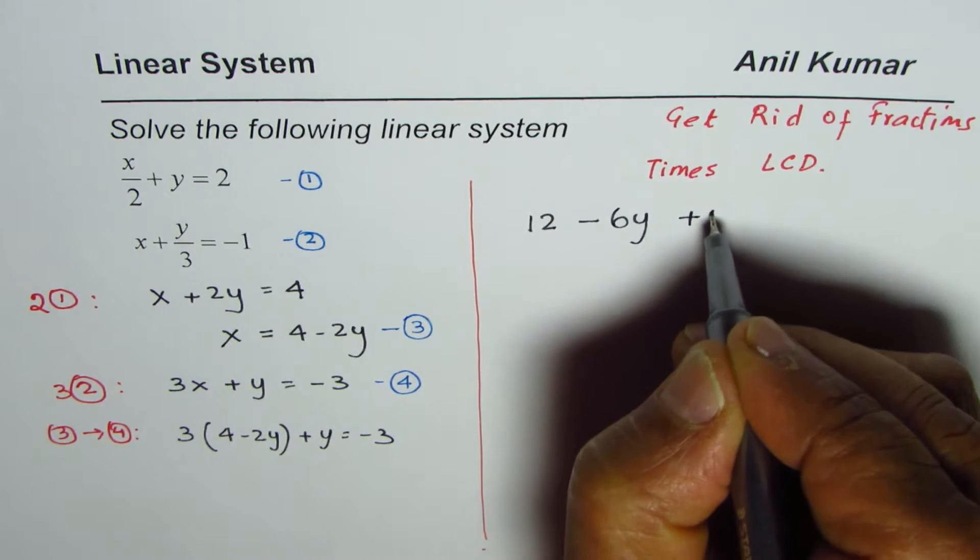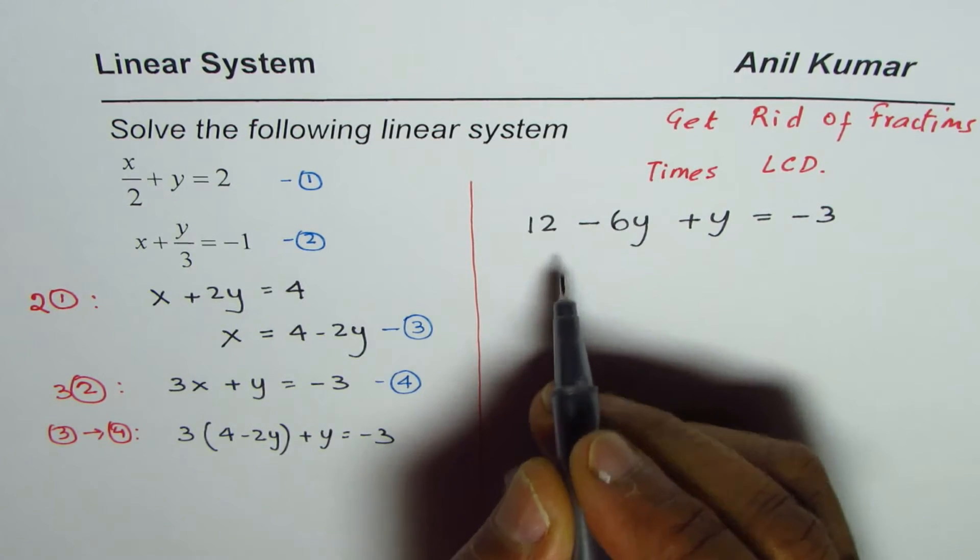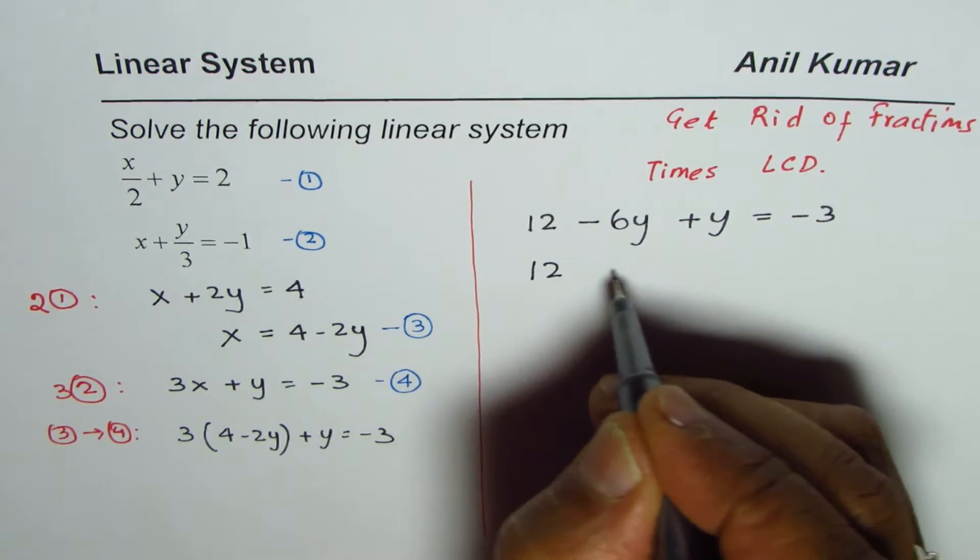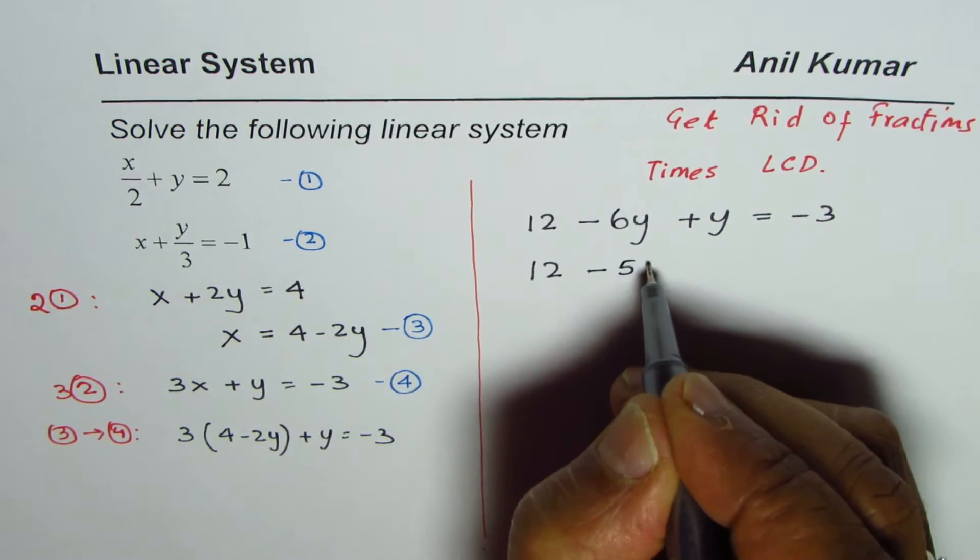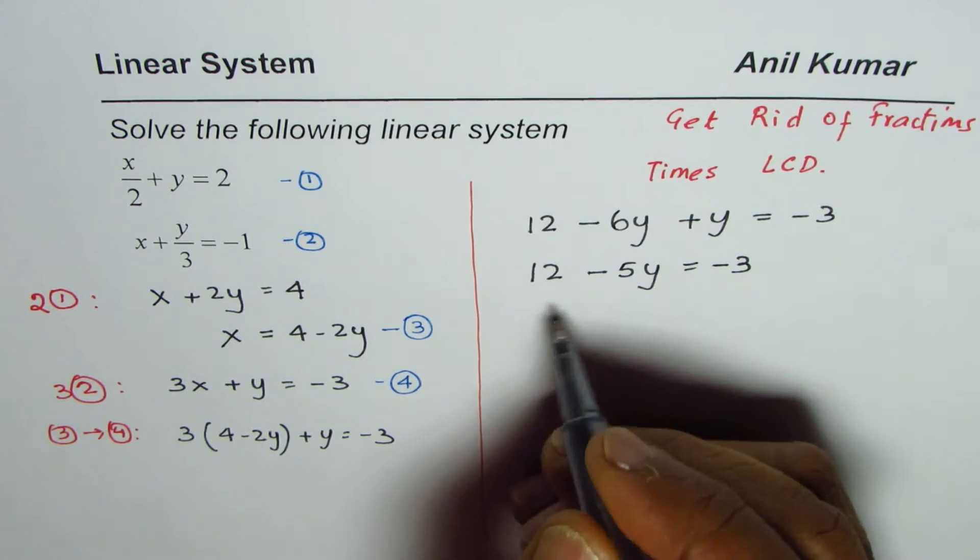So that gives us 12 minus 5y equals minus 3.